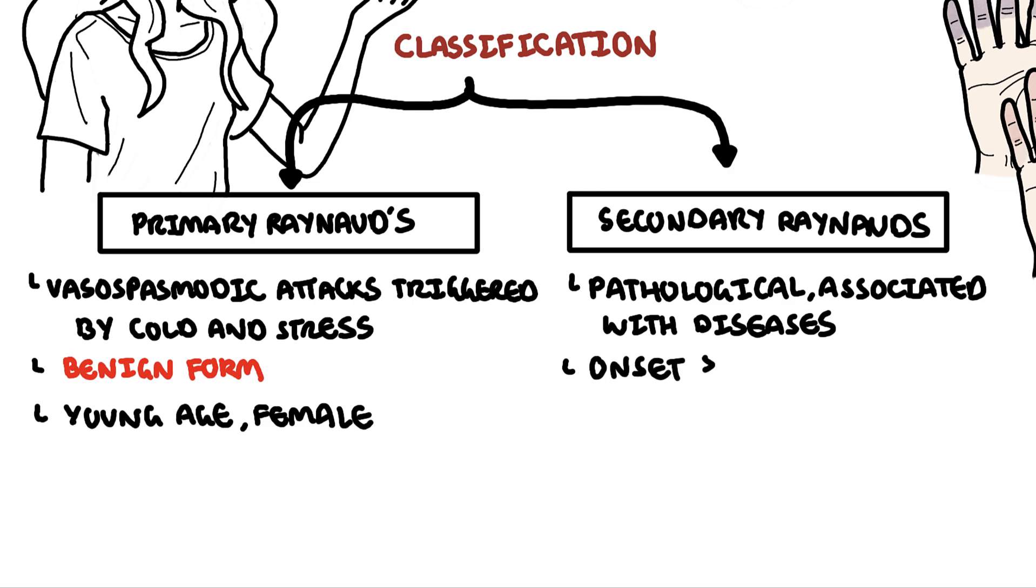The onset of secondary Raynaud's phenomenon is typically in middle to older adults. It can occur both in females and in men. However, being male of any age with Raynaud's should ring alarm bells for secondary Raynaud's phenomenon.